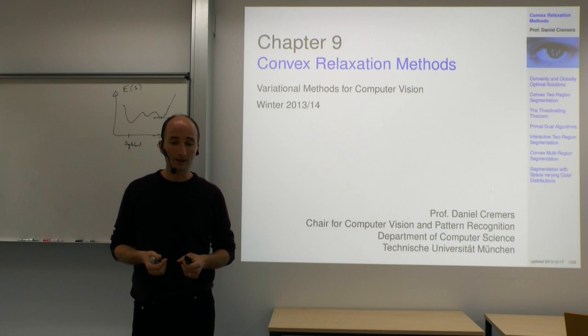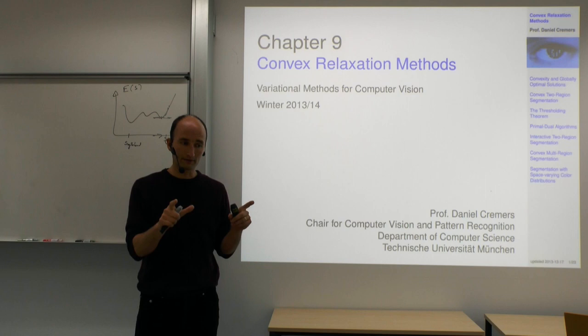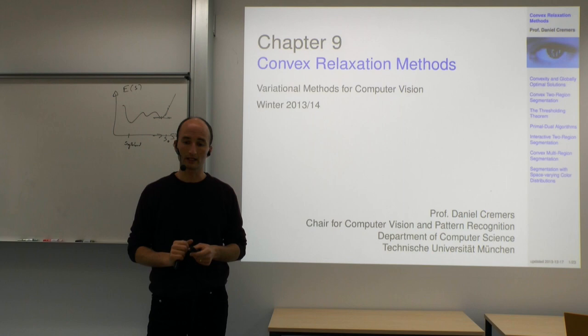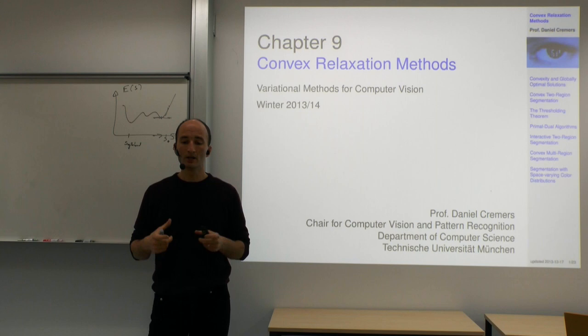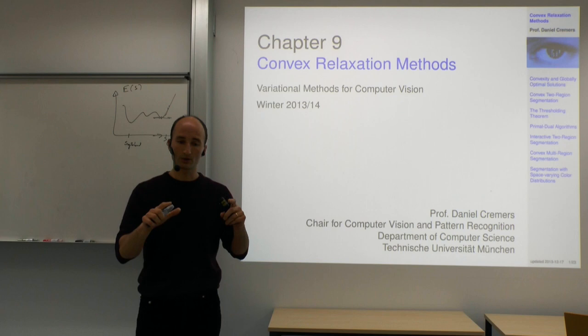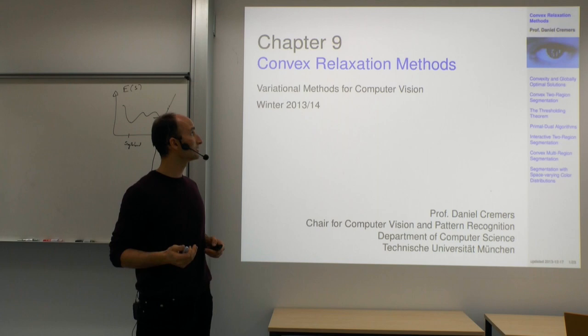For example, for the snakes, any strong gradient in the image will give rise to a local minimum — the curve is going to be attracted to these strong gradients. In practice, it means you need a user in the loop to make these methods work, to initialize the curve appropriately so that the local optimum is really what you want, meaning you cannot apply these methods as a black-box tool.